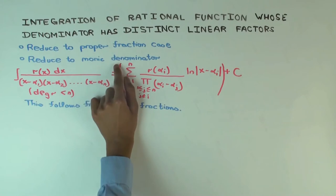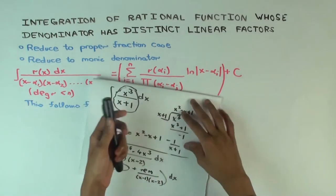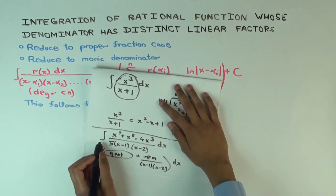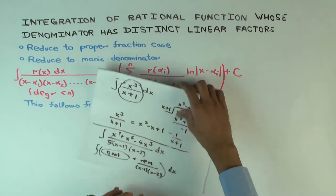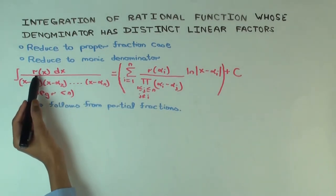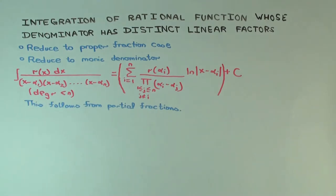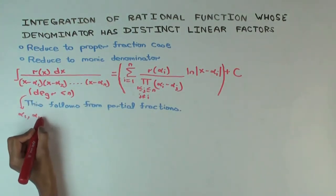You can also reduce to a monic denominator case, meaning that you can assume the leading coefficient of the denominator is 1. If you had a leading coefficient of 5, you could pull the 5 out at the beginning. So I'm going to make these two assumptions and consider the generic integration problem of this type. It's of the form: a polynomial divided by another polynomial which is a product of distinct linear factors, where alpha 1, alpha 2, through alpha n are all distinct.